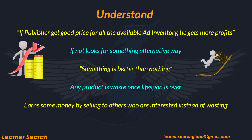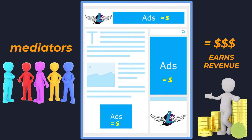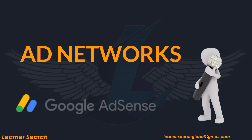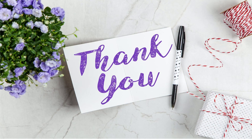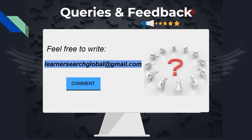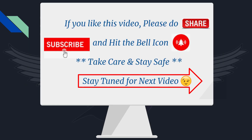To conclude, if a publisher can secure a good price for all the available ad inventory, they will make more money. If not, they look for an alternative to sell whatever is left over — something is better than nothing. Any product is waste once its lifespan is over. Instead of wasting unsold inventory, make some money by selling to a mediator. In the display advertising ecosystem, those mediators are ad networks, which act as intermediaries between advertisers and publishers to sell and buy ad inventory. I hope you understand the distinction between premium and remnant inventory. For any queries and feedback, feel free to reach out or mention it in the comments. Take care, stay safe, and stay tuned for our next video.